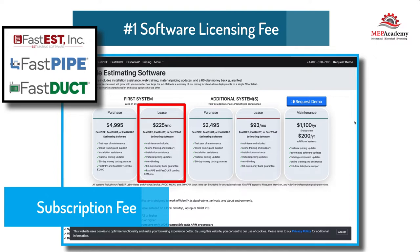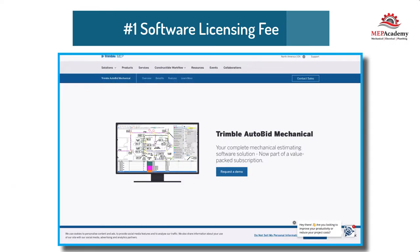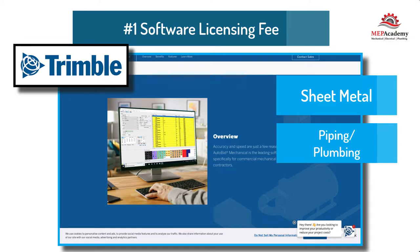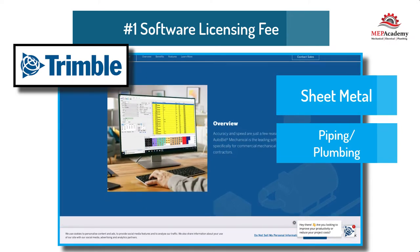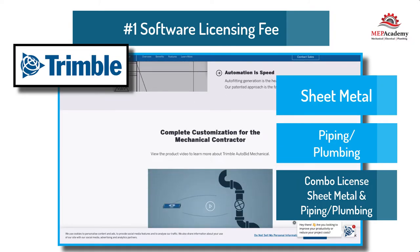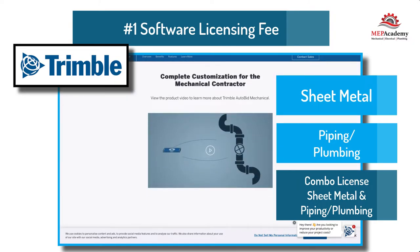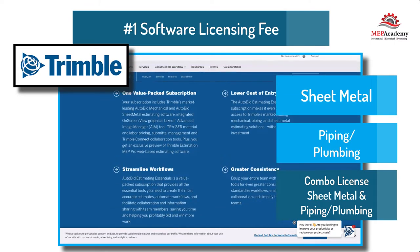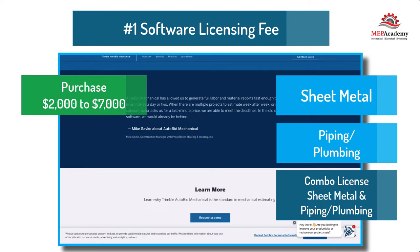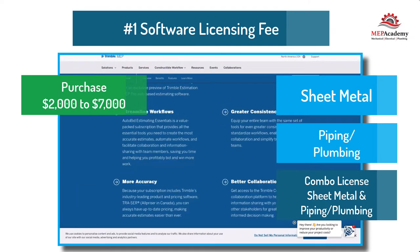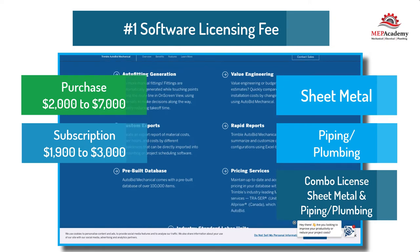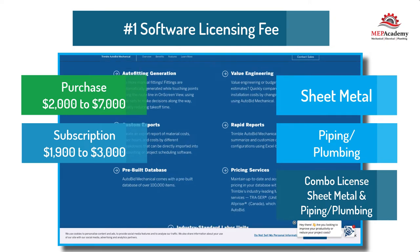Number 1: Software Licensing Fee. The first cost is the cost of a software license for each trade, such as a separate fee for sheet metal and another cost for a plumbing-piping combination license. Additional licenses after the first one should be at a reduced cost. The combination plumbing-HVAC piping is a single license and is sometimes slightly higher than the sheet metal license. The fee covers the right to use the software according to the terms of the license. Costs to purchase a single license range from a few thousand to upwards of $7,000 for a combo license that includes piping, plumbing, and sheet metal. For an annual subscription, the cost ranges from $1,900 to $3,000 per year, with some that provide a monthly lease agreement.